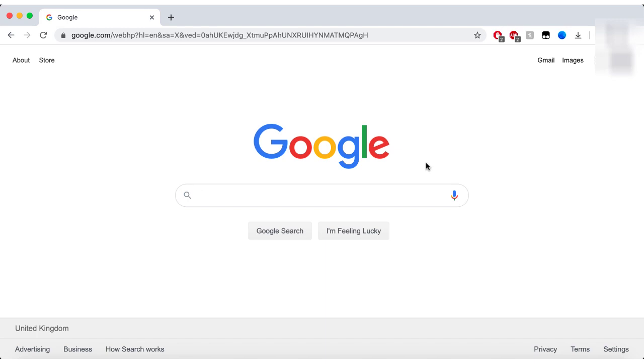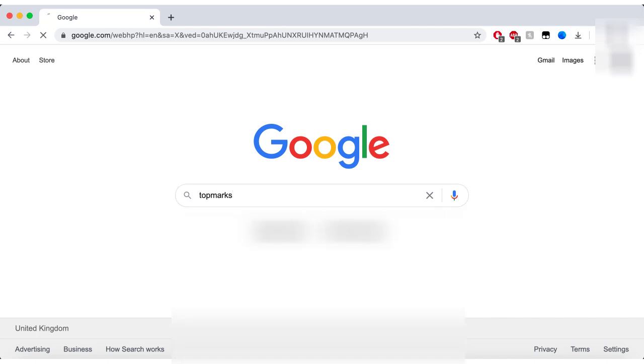So what you need to do first and foremost is go to your search engine and you need to type in the word Topmarks. Nothing else, nothing fancy, no full website, just the word Topmarks. The first result that you come up with is what you're going to be looking for.